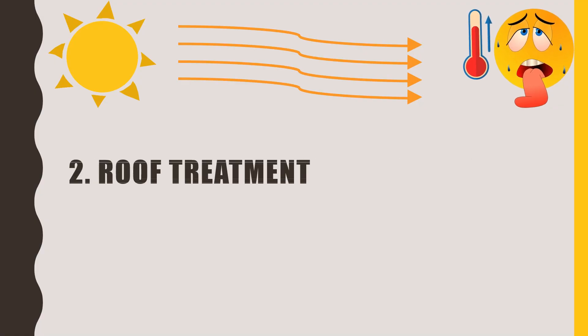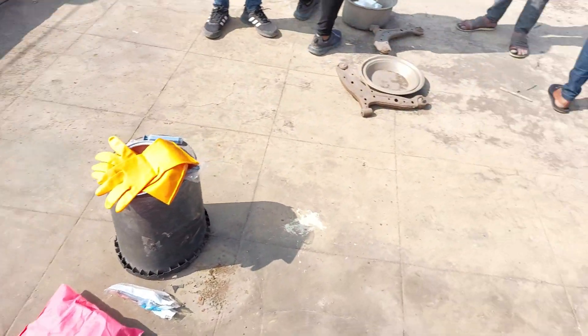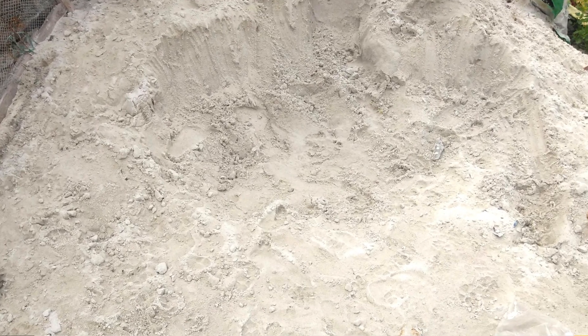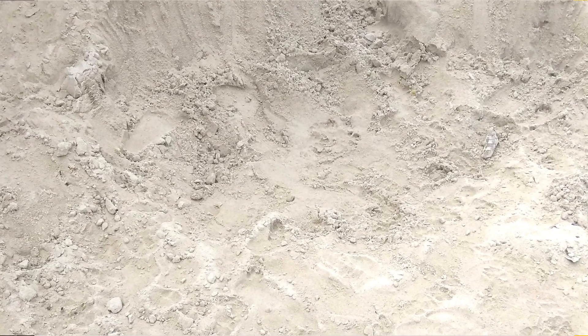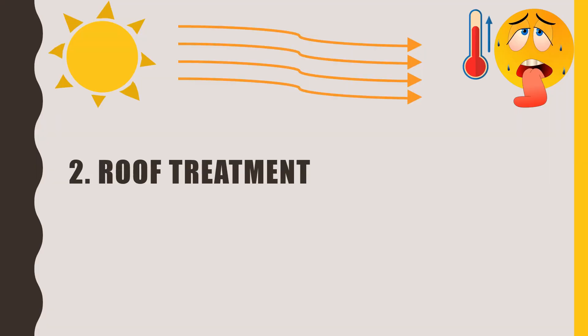Tip number two is roof treatment. If there is direct sunlight striking your terrace, there may be higher temperature inside your house. To control this rising temperature, we have numerous options in terms of roof treatment. One of them is lime treatment — wash the entire terrace first, then mix 10 kg of lime and 1.5 kg of Fevicol, and paint this mixture on the entire roof.